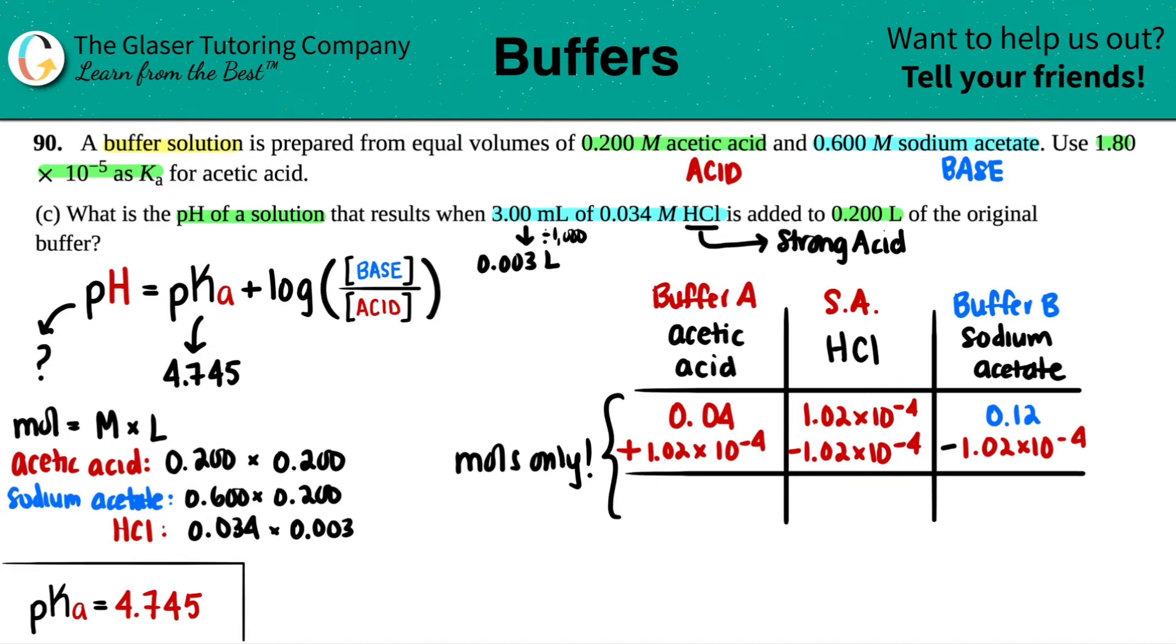So 1.02 times 10 to the negative fourth and 1.02 times 10 to the negative fourth. If you're adding a strong acid and that amount is interacting with another acid, the acidity will increase - they're both red colors, so they go together. This will be added. However, the base is going to try to eat away at the acid, so this will be a subtraction - the colors are two different colors. Now when we do that, we get a final number. Since there's no more HCl, this is zero. Now 0.04 plus 1.02 times 10 to the negative fourth, I get 0.040102. And for the base minus 1.02 times 10 to the negative fourth, I get 0.119898.